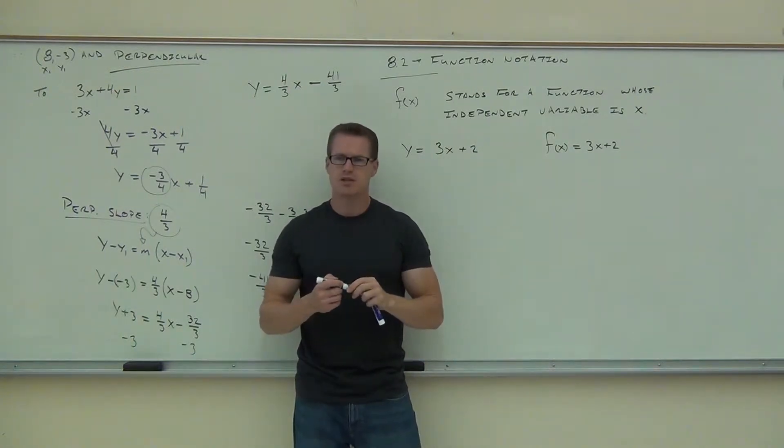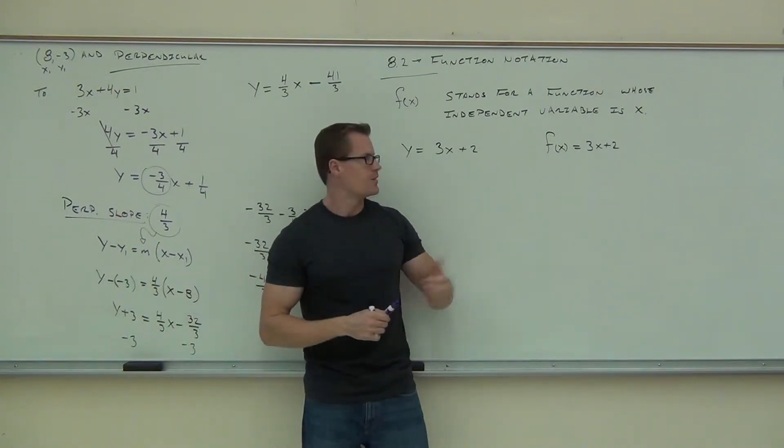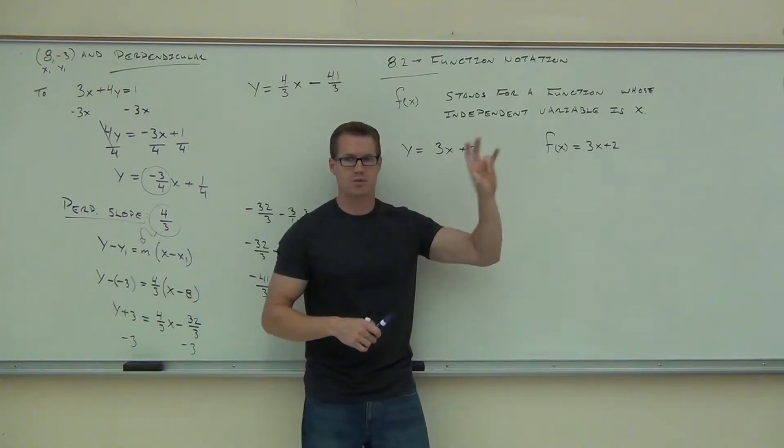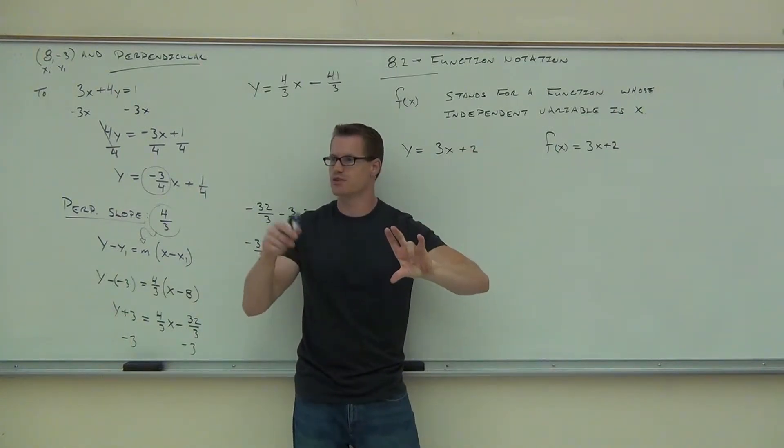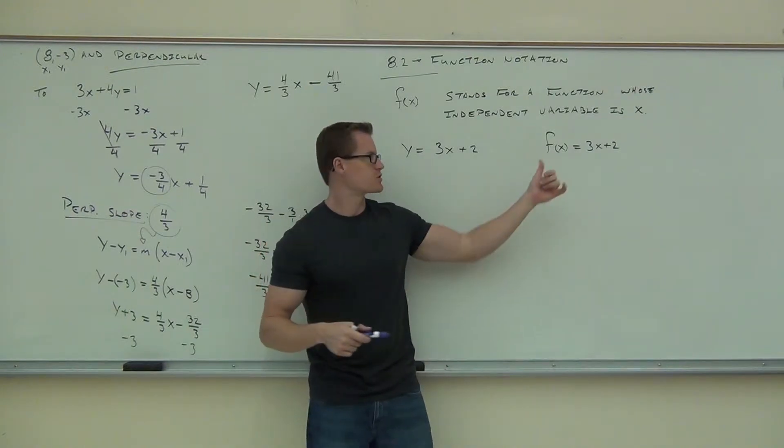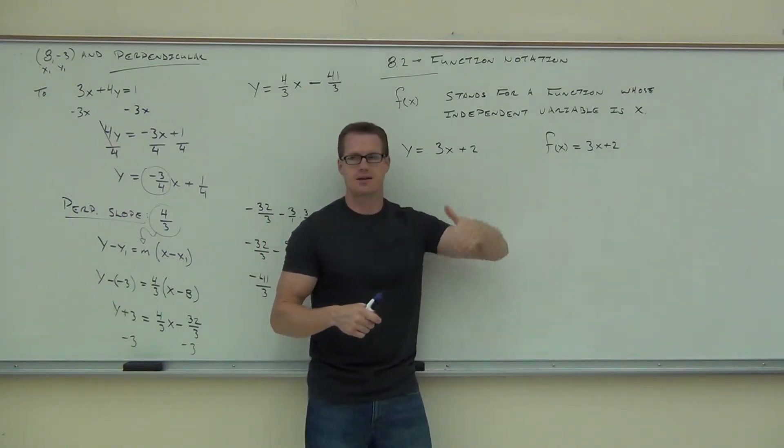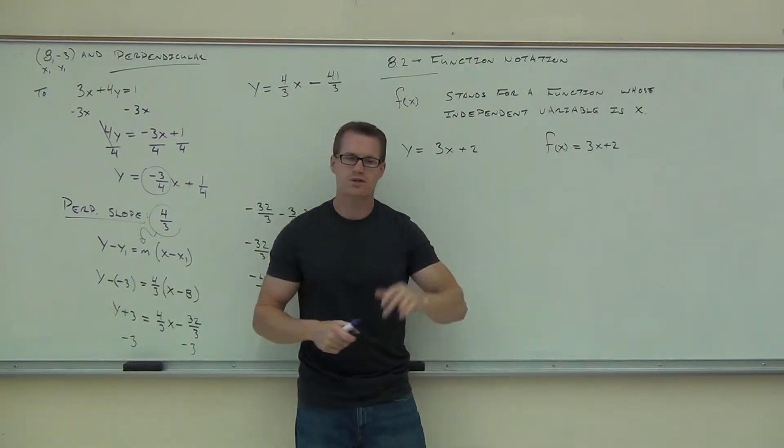Why in the world do we even talk about this when we already have this one? The first reason is, if you need to graph more than one line on the same set of axes, this way lets you identify them. This way doesn't, because all these will be y equals, y equals, y equals. You can't tell the difference just by looking at the line. This one you do f of x, g of x, h of x, and so on, and identify every unique line.